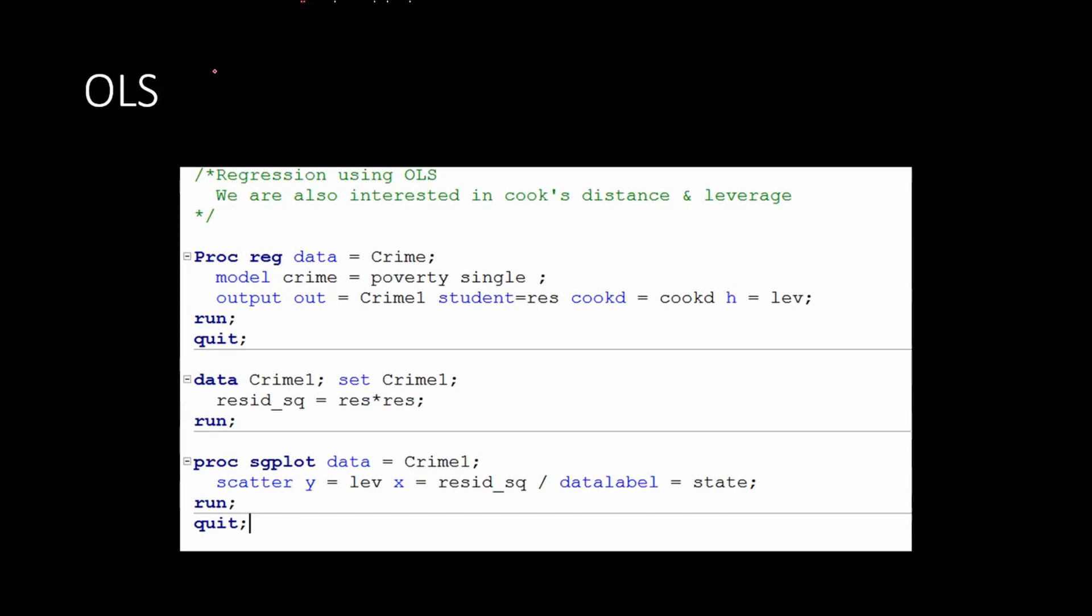So first we will do ordinary least square regression and we will keep the results. Then we will do robust regression and we will then compare the results from OLS regression with that of the robust regression. And we will see what the differences are. We will use PROC REG in SAS and the data set is crime. We are using two independent variables, poverty and single, and the dependent variable is crime. We also want the residuals. We are also getting the Cook's D. So Cook's D is nothing but a measure for outliers.